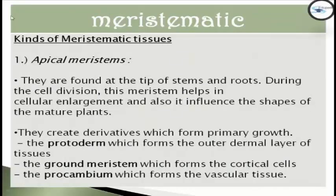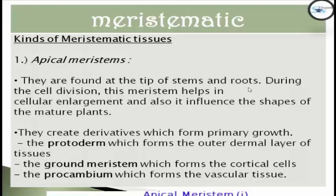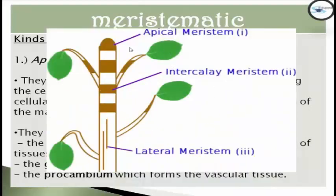There are three kinds of meristematic tissue. The first is apical meristems, which is found at the tip of the stem and roots during cell division. This type of meristematic tissue helps in cellular enlargement and also influences the shapes of mature plants. They create derivatives which form primary growth: protoderm, which forms the outermost layer of tissues; ground meristem, which forms the cortical cells; and procambium, which forms the vascular tissues.